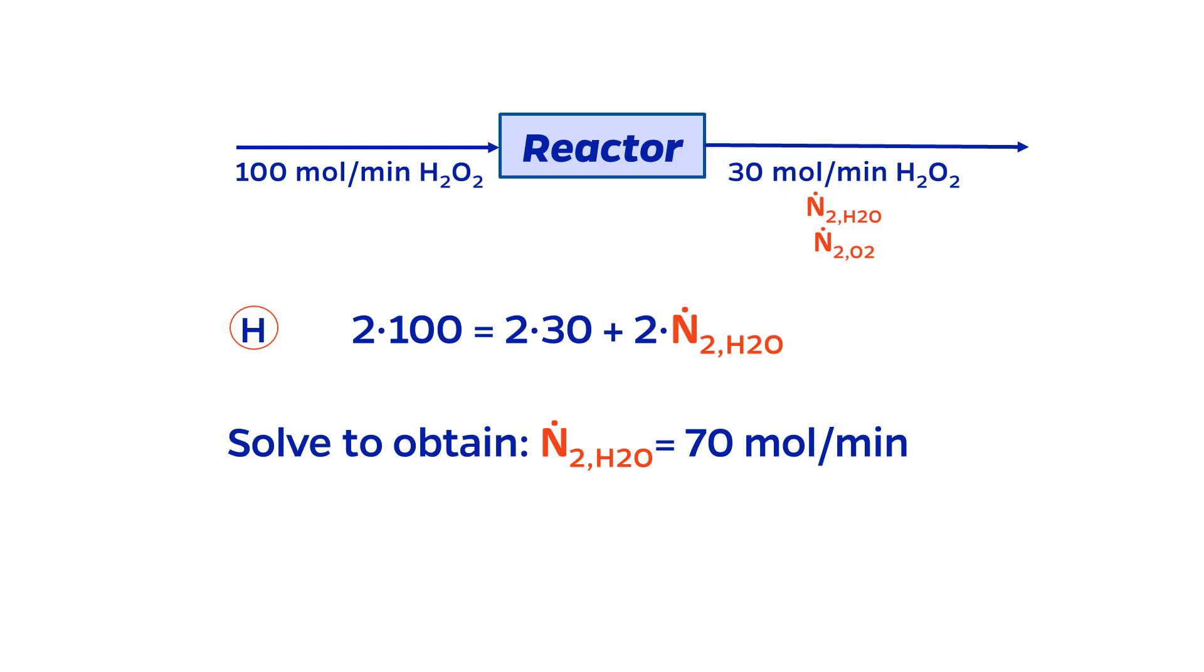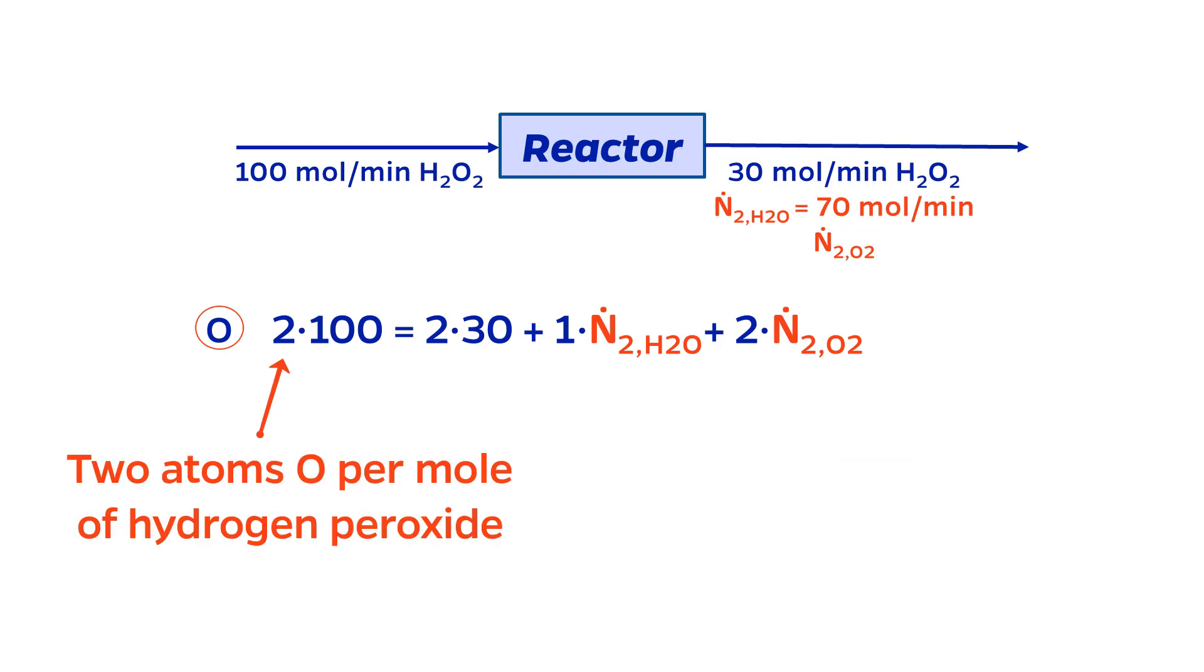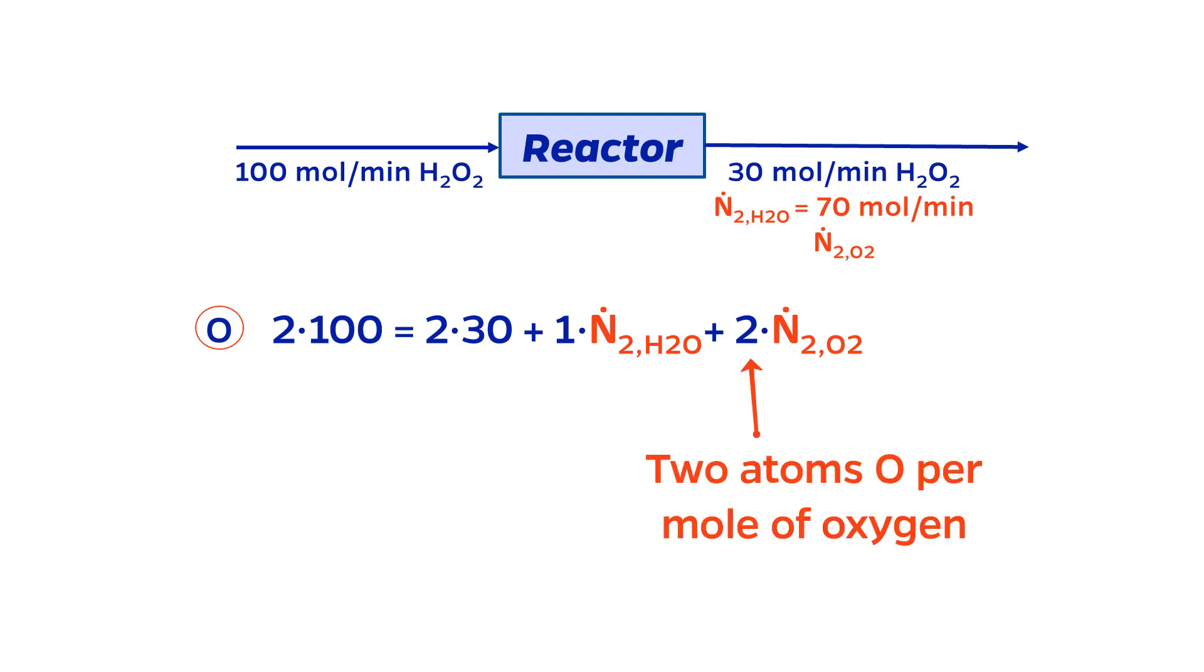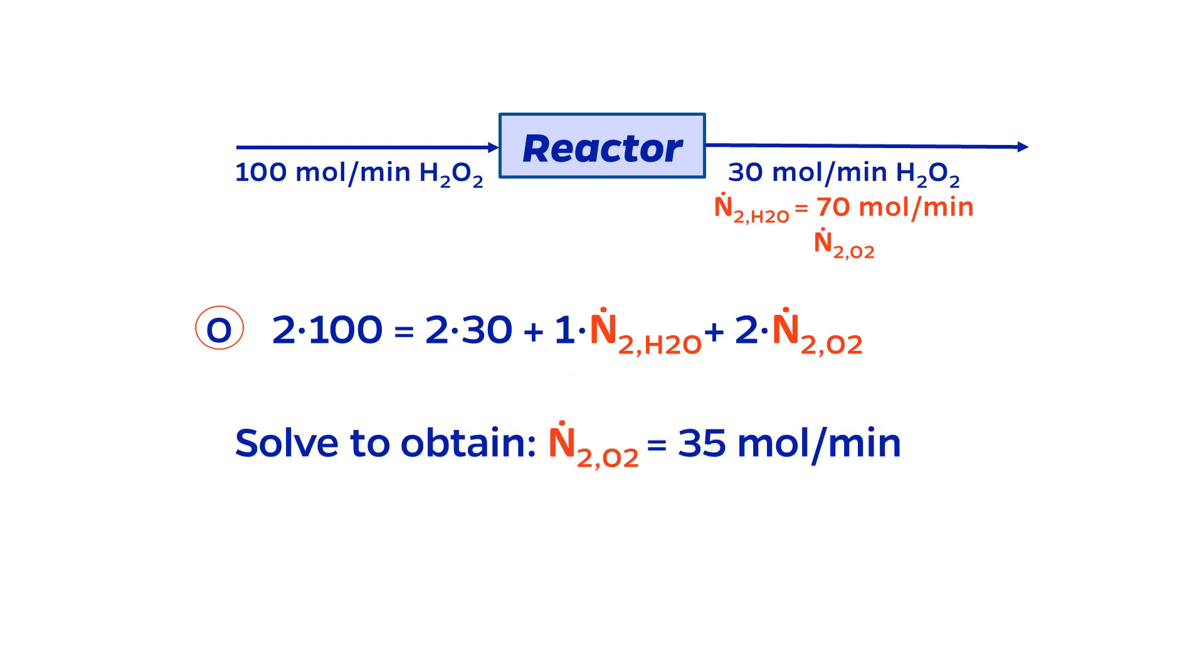Now let's do the oxygen balance. There are two oxygen atoms per mole of H2O2, one atom per mole of H2O, and two atoms per mole of O2. So I have 2 times 100 coming in, and 2 times 30, plus 1 times the exit flow rate of water, plus 2 times the exit flow rate of O2 coming out. Plugging in the 70 moles per minute for water that I just solved for, I get 35 moles per minute of oxygen in the exit stream.